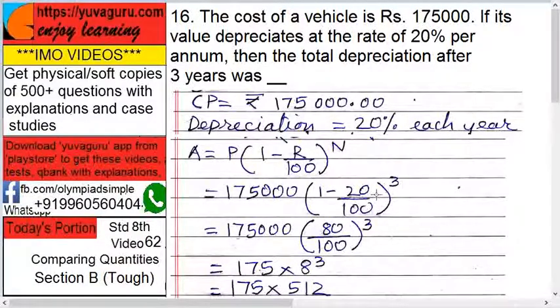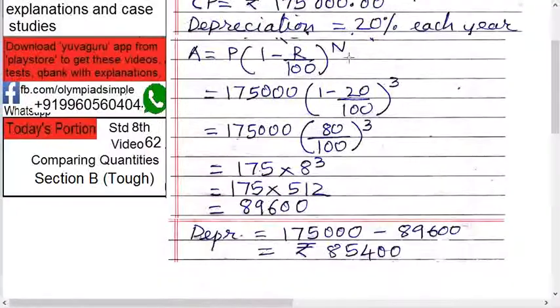100 minus 20 becomes 80 upon 100. So 175,000 into 80 upon 100, the whole cube. Right? So solve this. You get there are six zeros below, and here there are three zeros and three over here. So all the zeros will go. What remains is 175.